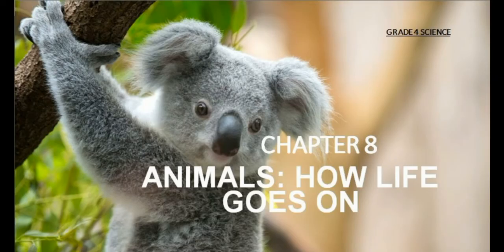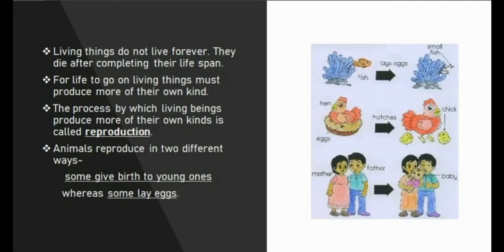Hello students, I hope you all are fit and fine. Today we will be learning chapter 8, that is Animals: How Life Goes On. Living things do not live forever; they die after completing their lifespan. For life to go on, living things must produce more of their own kind. The process by which living beings produce more of their own kind is called reproduction.